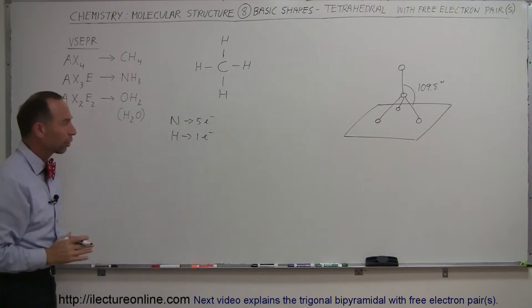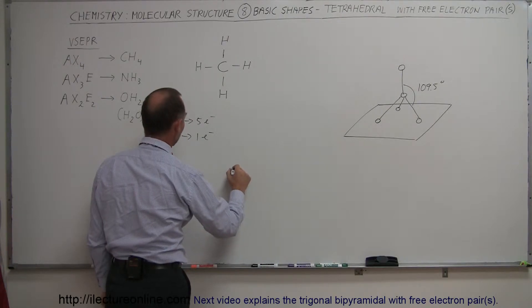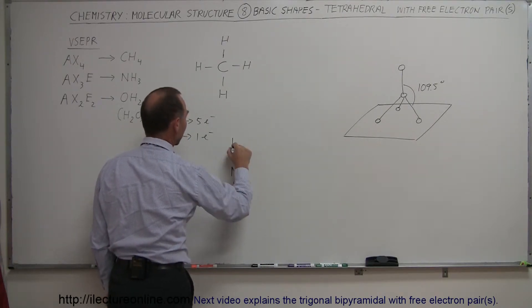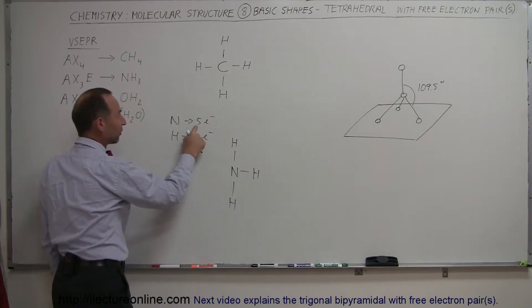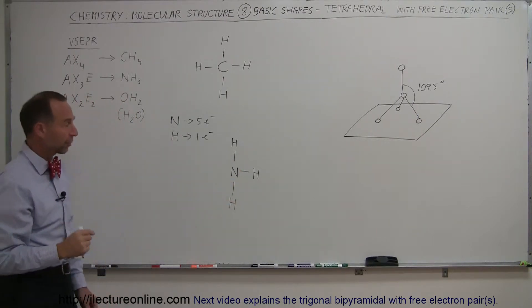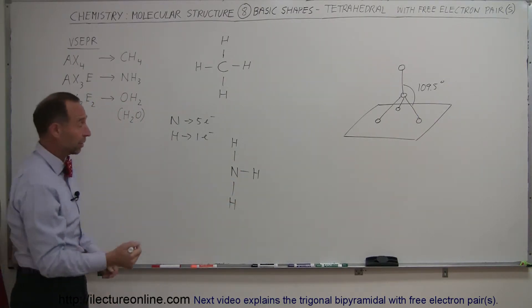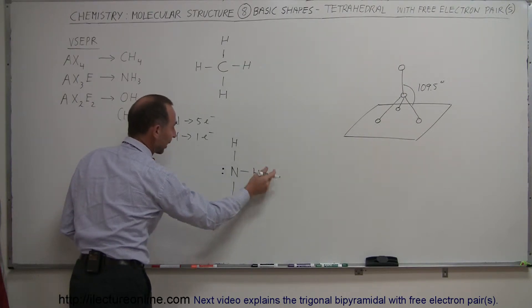What does that molecule look like? Well, if we draw the Lewis structure of that, we notice that we have nitrogen right here, forming three bonds with the hydrogen. Notice that hydrogen started with five valence electrons. It only used up three of the valence electrons to make the bonds with the hydrogen, which means it has two extra electrons left over, so it has a free electron pair. Of course, hydrogen does not.